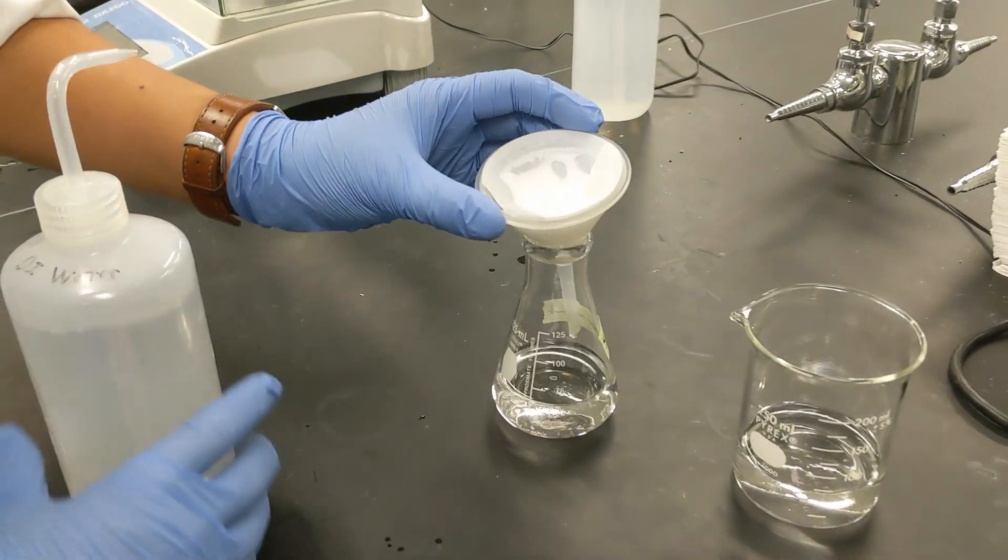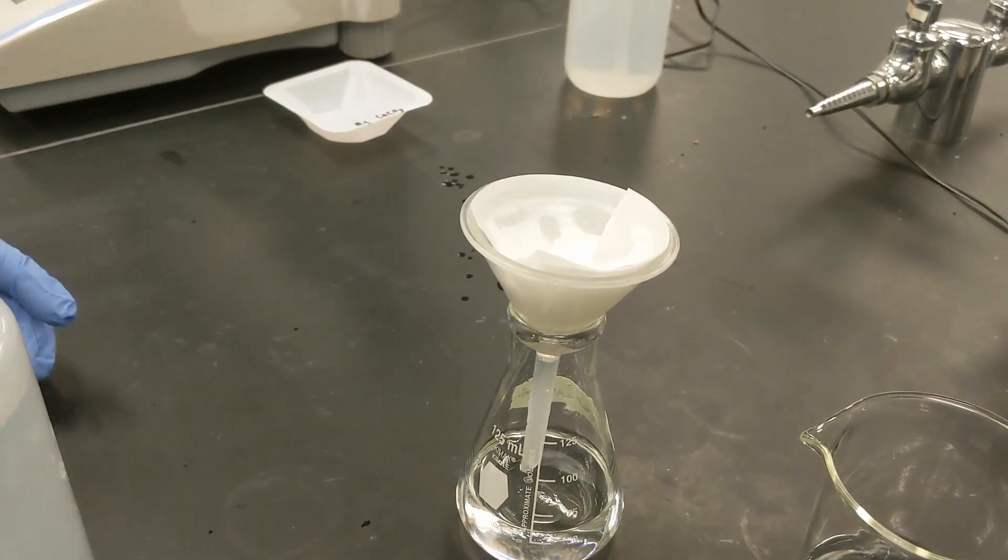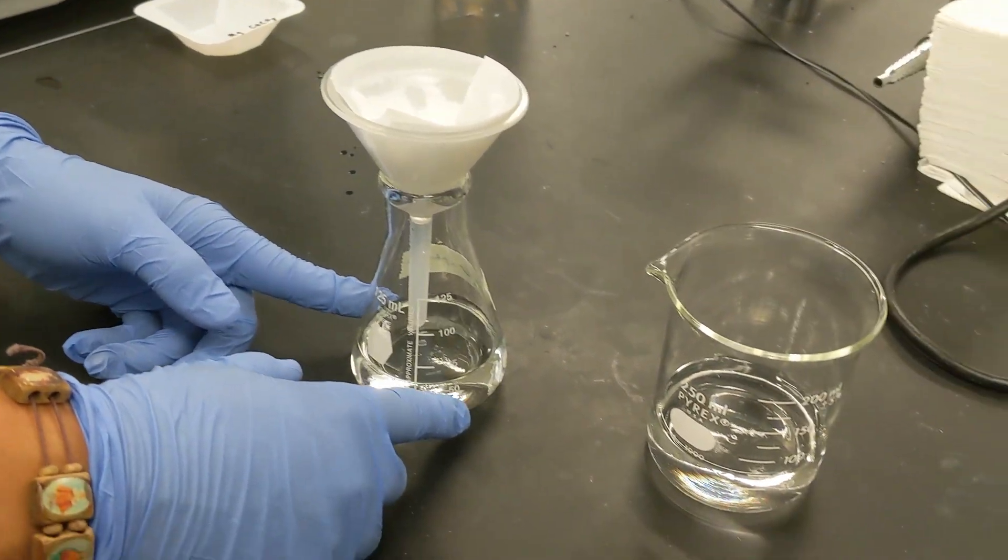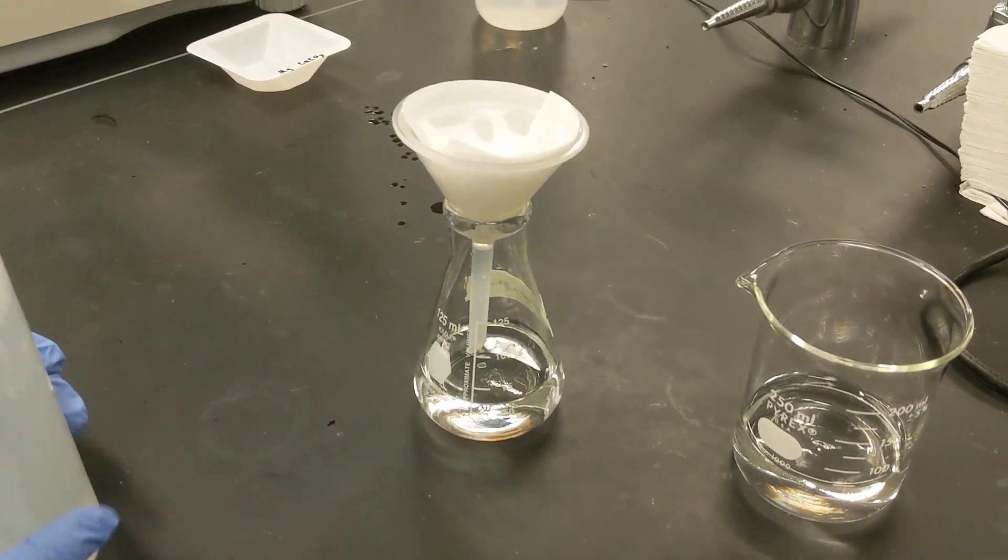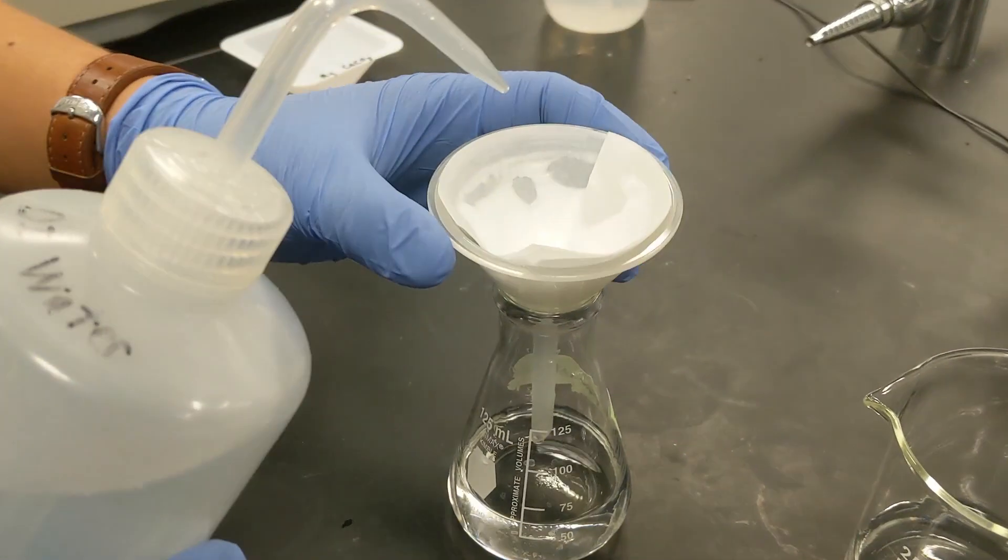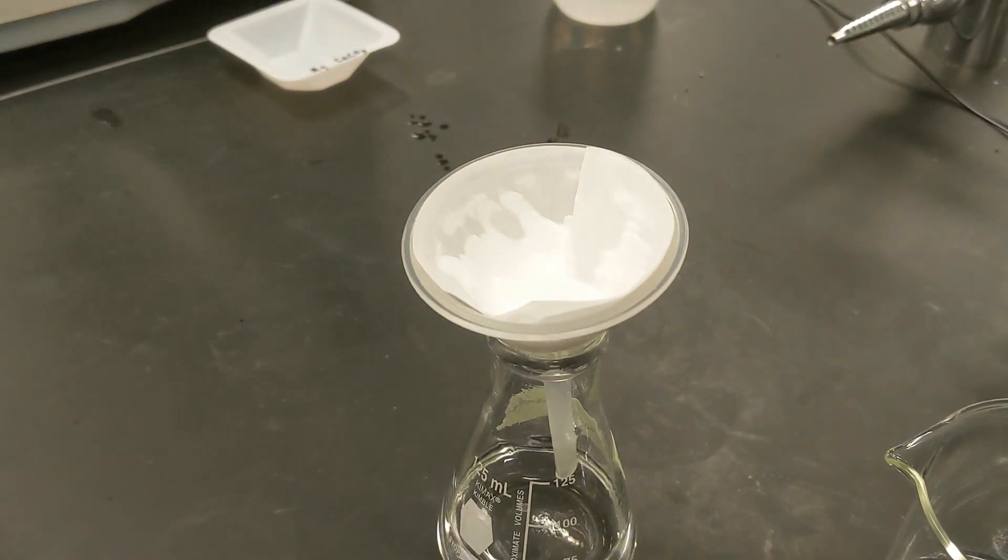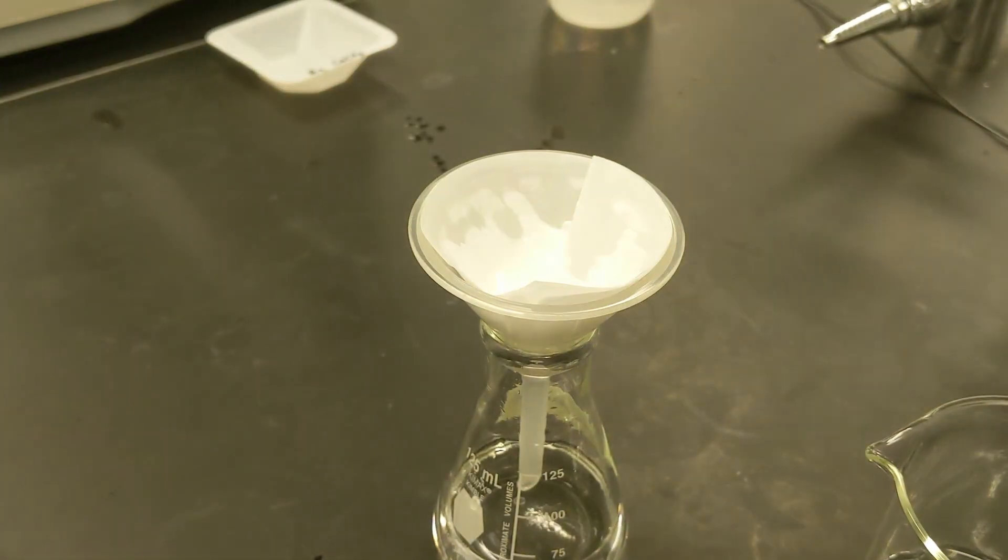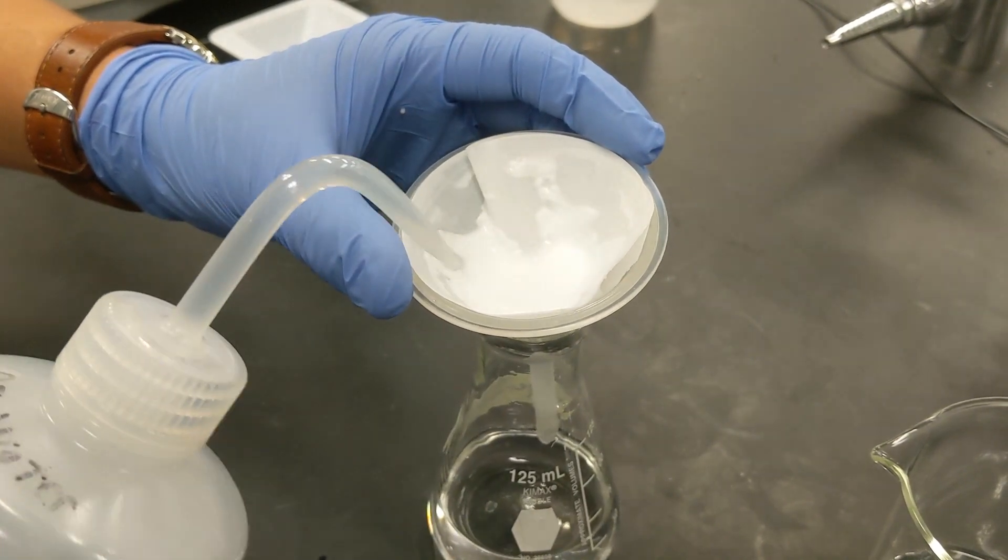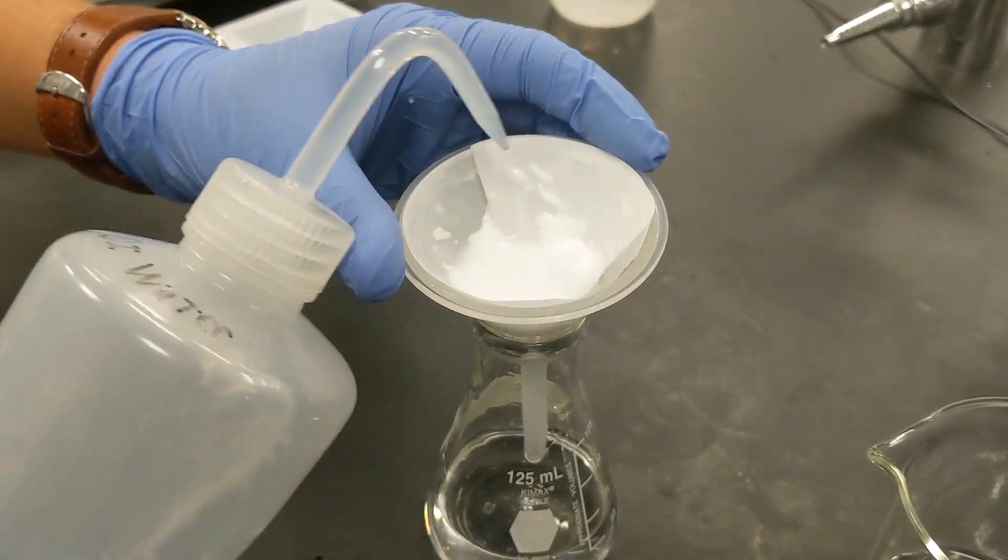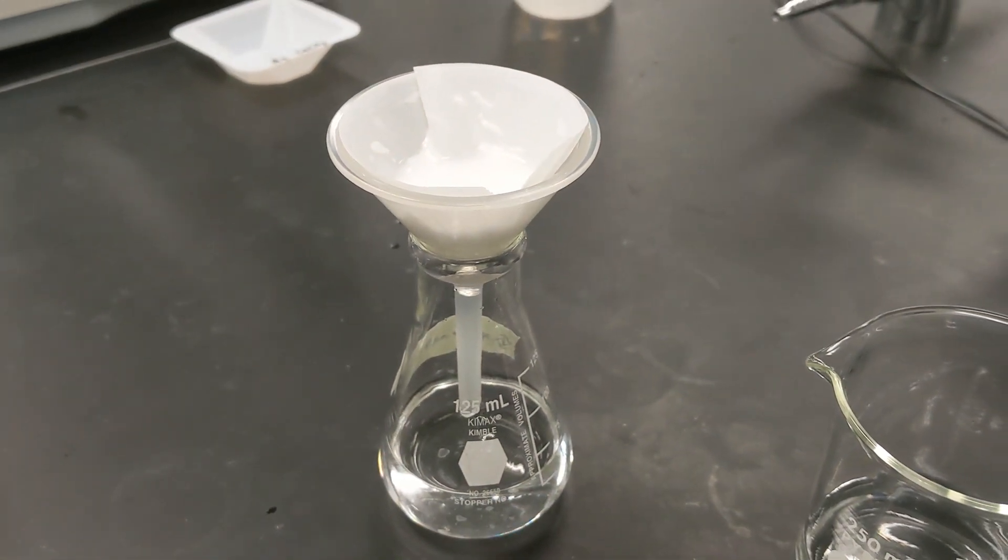So now that most of the supernatant has drained and we have our precipitant in the filter, what I did was transferred some of the new supernatant from the Erlenmeyer flask into another beaker, just because this is going to continue to get full. Because we're going to add a little bit more DI water to this just to finish washing it out. I'm going to do a few little rinses here. One or two or three is fine. So we'll just finish rinsing it out. And we'll let that continue to drain and then we'll move on from there.